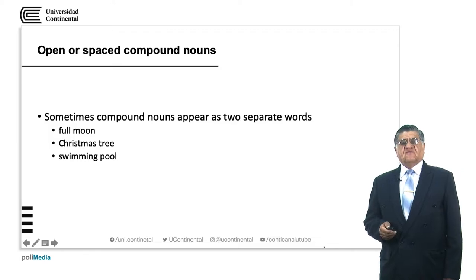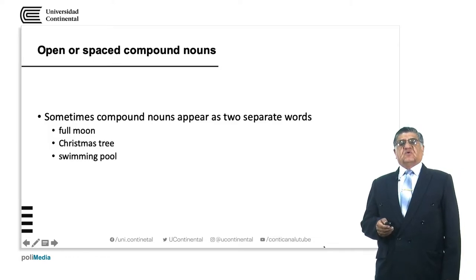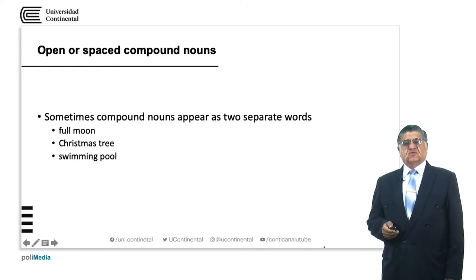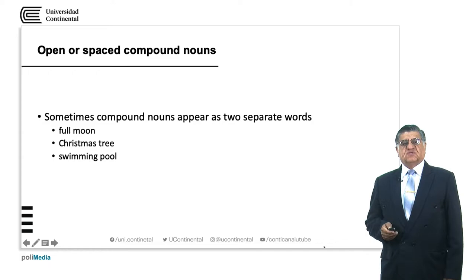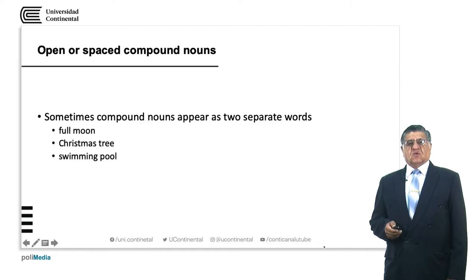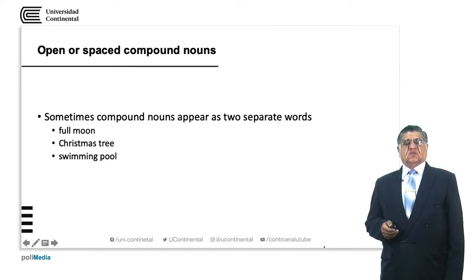We have two separate words without any connection but that have a very specific meaning: 'full moon', 'Christmas tree', 'swimming pool'. These words are well known, so they don't need much explanation.